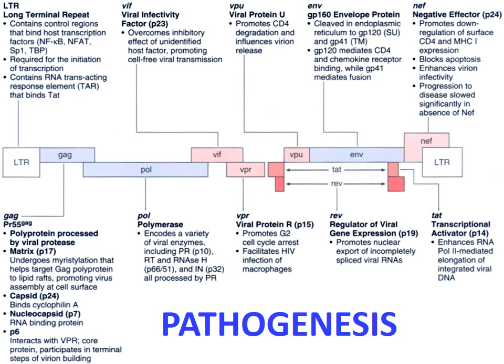Nine genes play a role in the pathogenesis of HIV. Among them, three genes — gag, pol, and envelope (env) — play a role in virus assembly and viral synthesis. The gag protein is a polyprotein processed by viral protease. It promotes virus assembly at the cell surface and contains matrix p17, capsid p24 protein, nucleocapsid RNA-binding protein, and p6, which integrates with the final virion budding process.